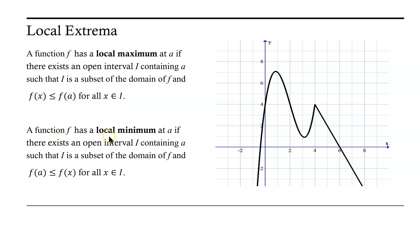A function f has a local minimum at a if there exists an open interval I containing a such that I is a subset of the domain of f, and f(a) is less than or equal to f(x) for all x in the interval. That is, for x equals a, we can find an interval around a such that the output value at a is the smallest output value for all x in that interval.